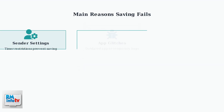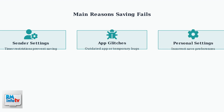There are three main reasons why you might not be able to save snaps in chat. First, sender settings, where the person who sent the snap has set timer restrictions. Second, app glitches from outdated versions or temporary bugs. Third, incorrect personal settings in your own Snapchat preferences.